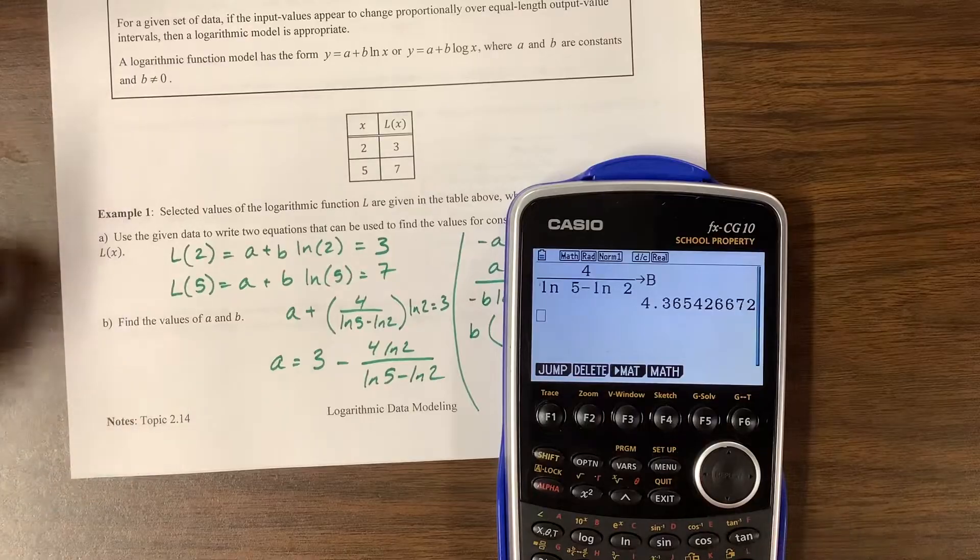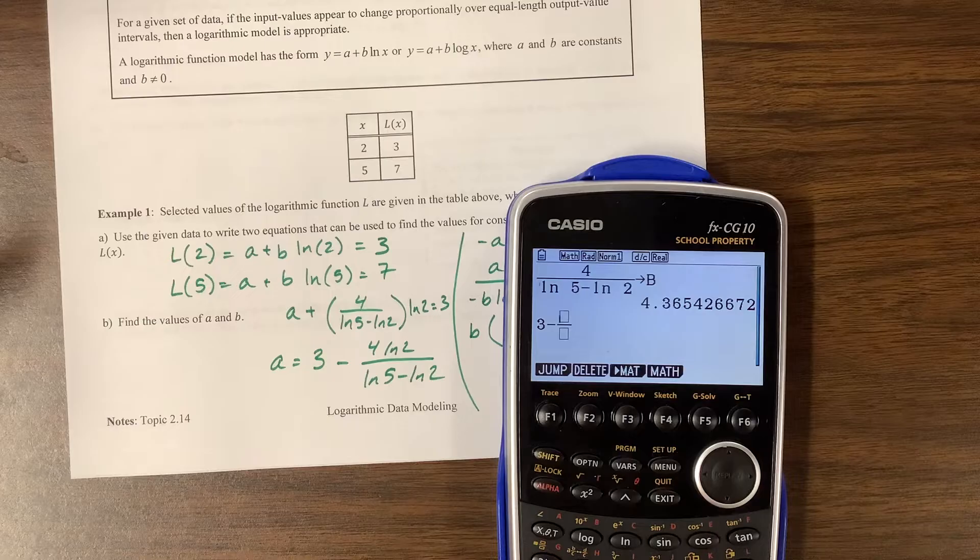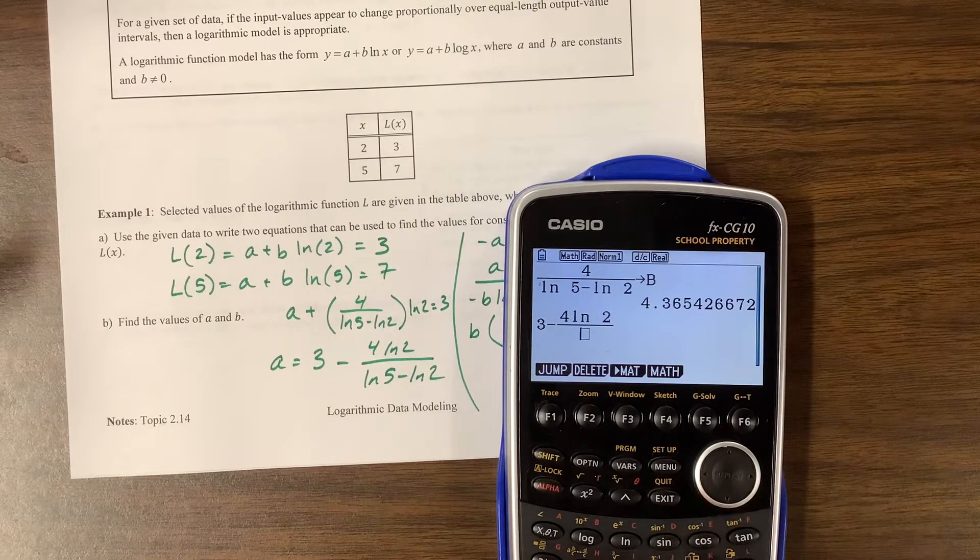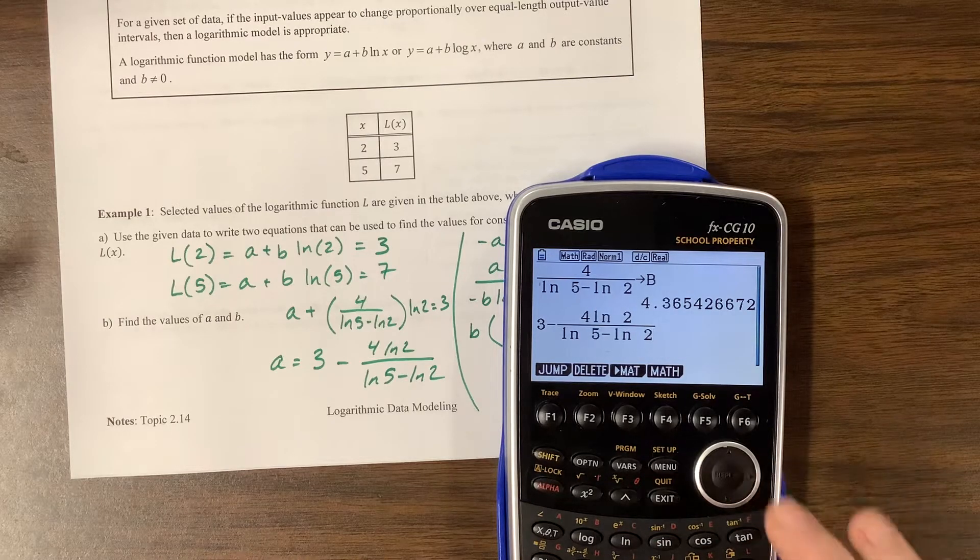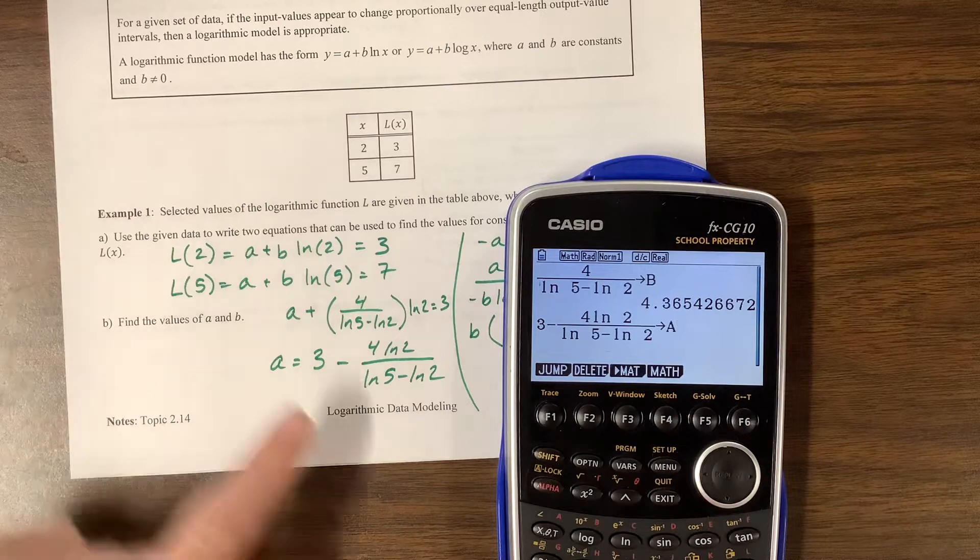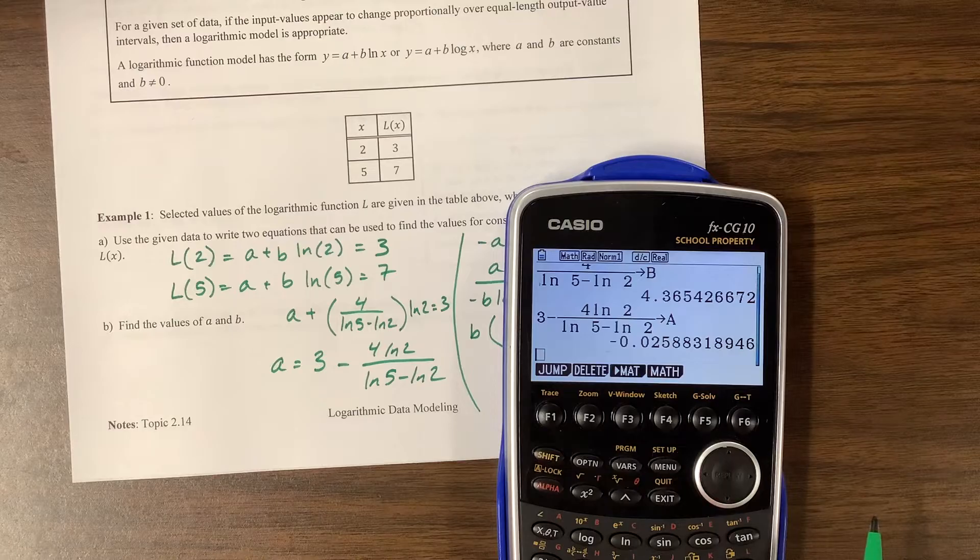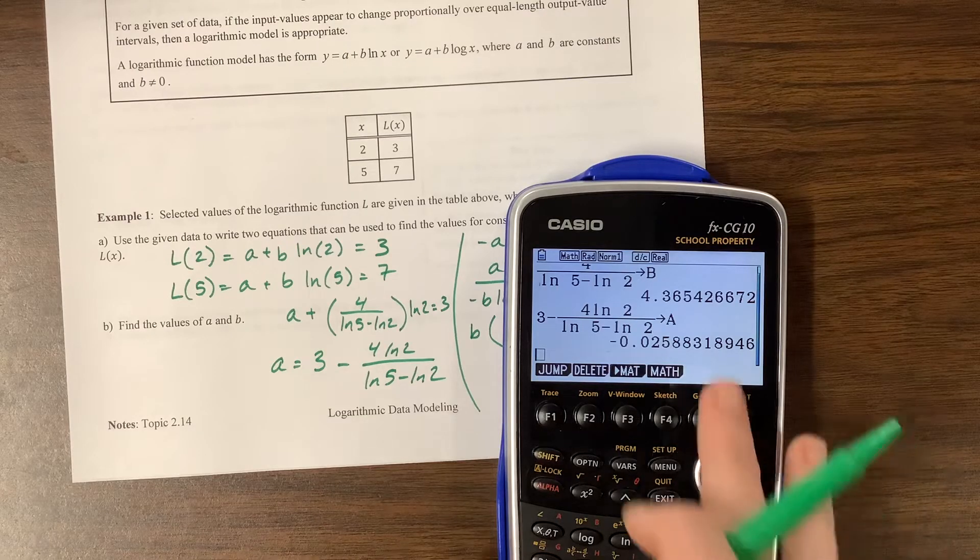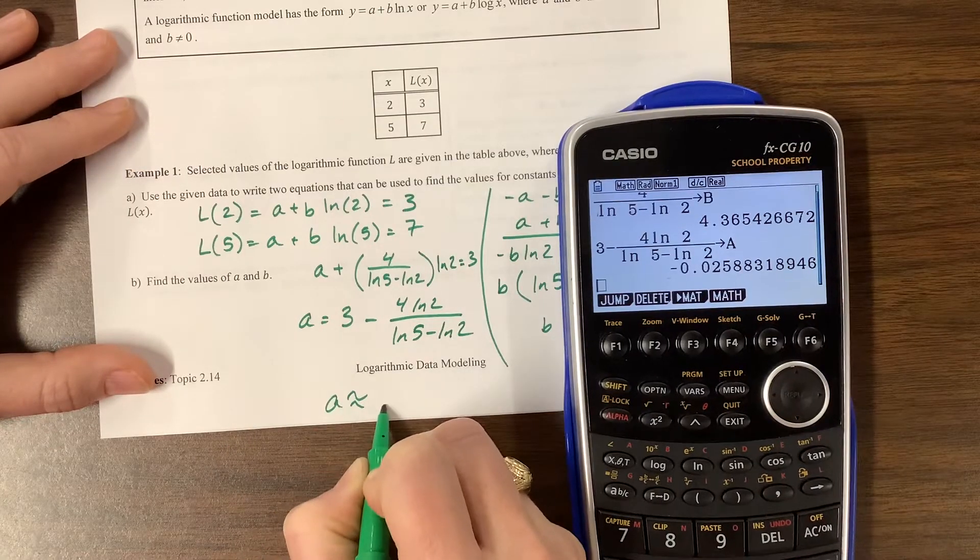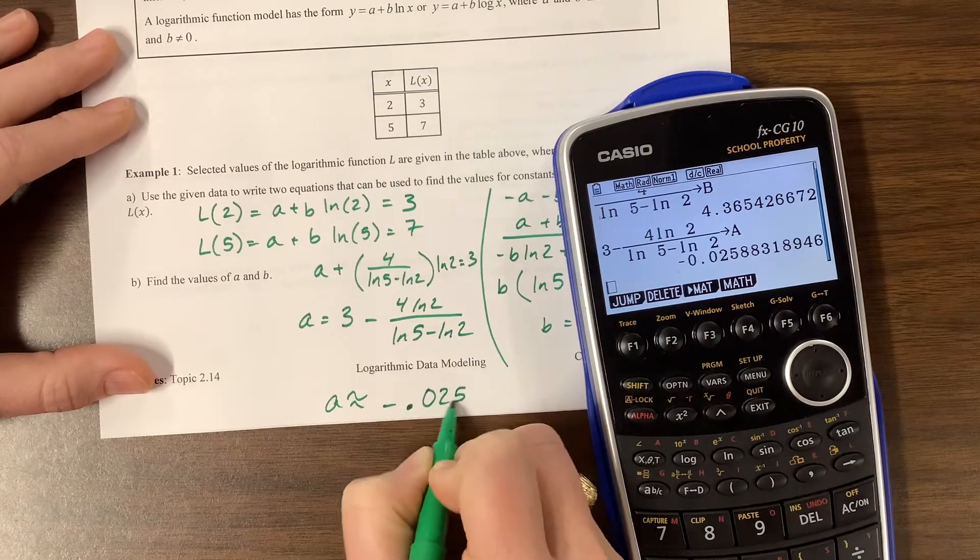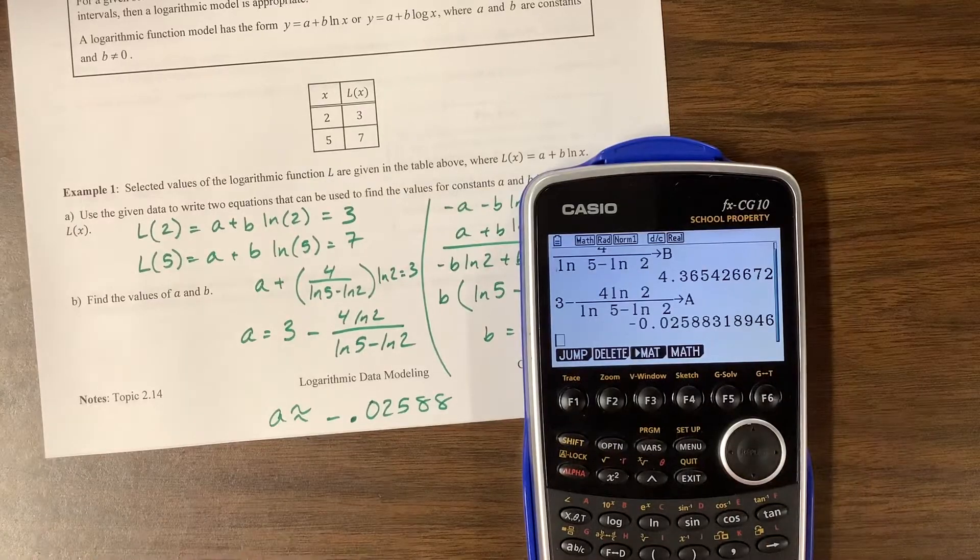Let's see what that gives me. I can take this and say 3 minus, using my fraction, 4 times the natural log of 2 over the natural log of 5 minus the natural log of 2. I'm going to take this number and store this as alpha A because that was my A value. So I just found that A was approximately negative 0.02588. That might have been it, I don't remember.